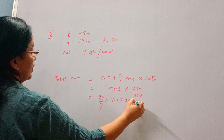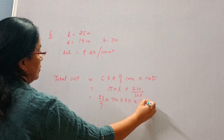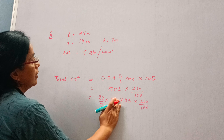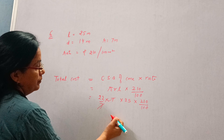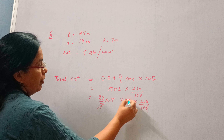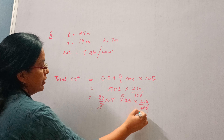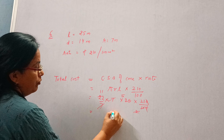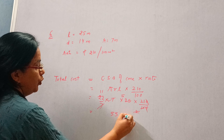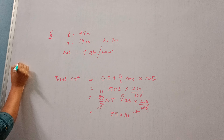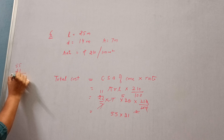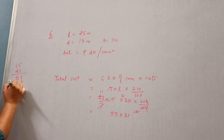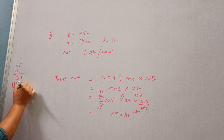The curved surface area of cone is pi times r times l. The rate is rupees 210 per 100 meter square. Pi is 22 by 7. Diameter is 14, so radius will be 7. And slant height is 25. Now simply put all the values in and you can find the answer.